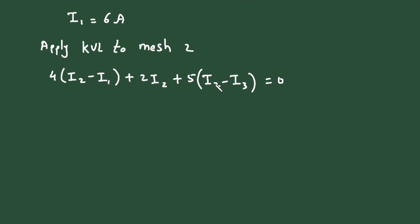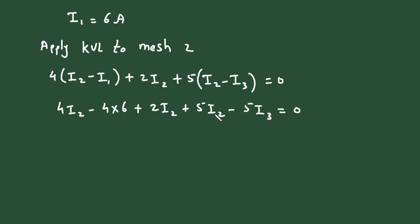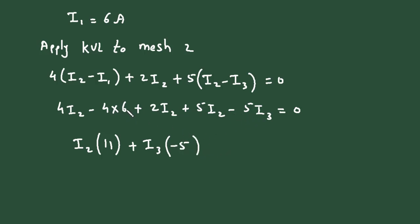Now let's simplify this: 4(I2) minus 4(I1), and the value of I1 is 6 ampere, so 4 times 6, then plus 2(I2) plus 5(I2) minus 5(I3) is equal to 0. Taking I2 common: 11(I2) minus 5(I3) minus 24 equals 0, or 11(I2) minus 5(I3) equals 24. Let's call this equation number 1.